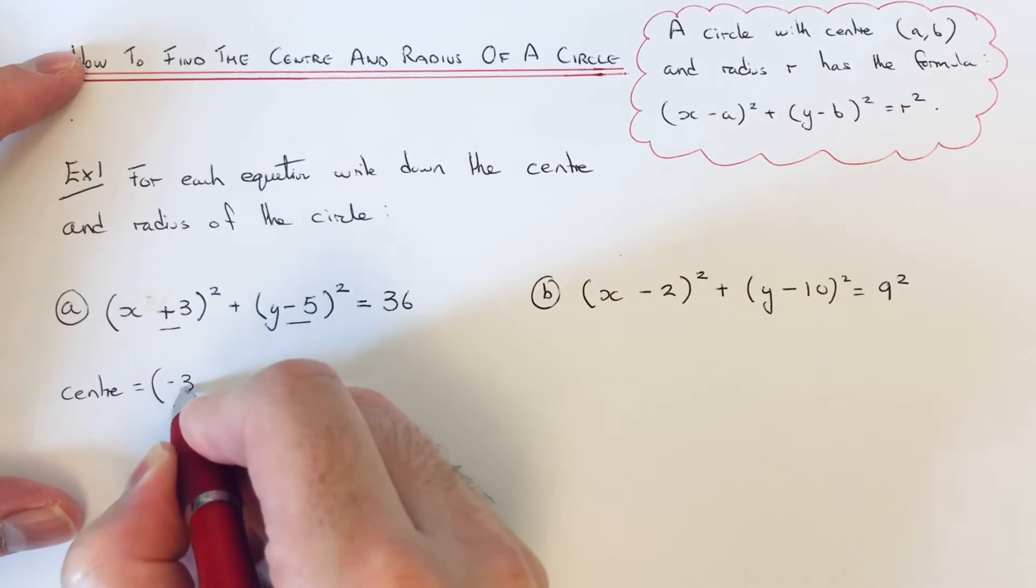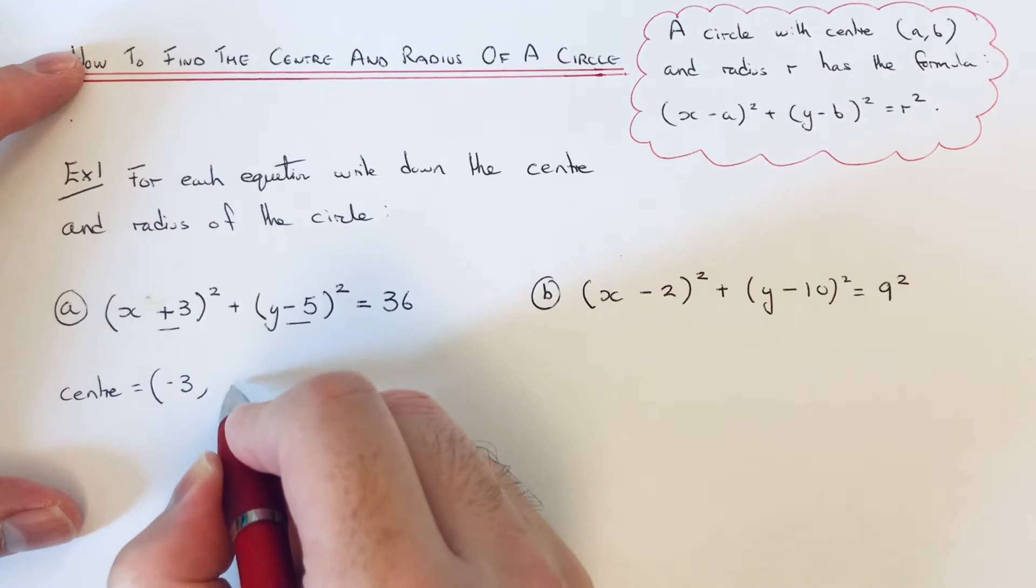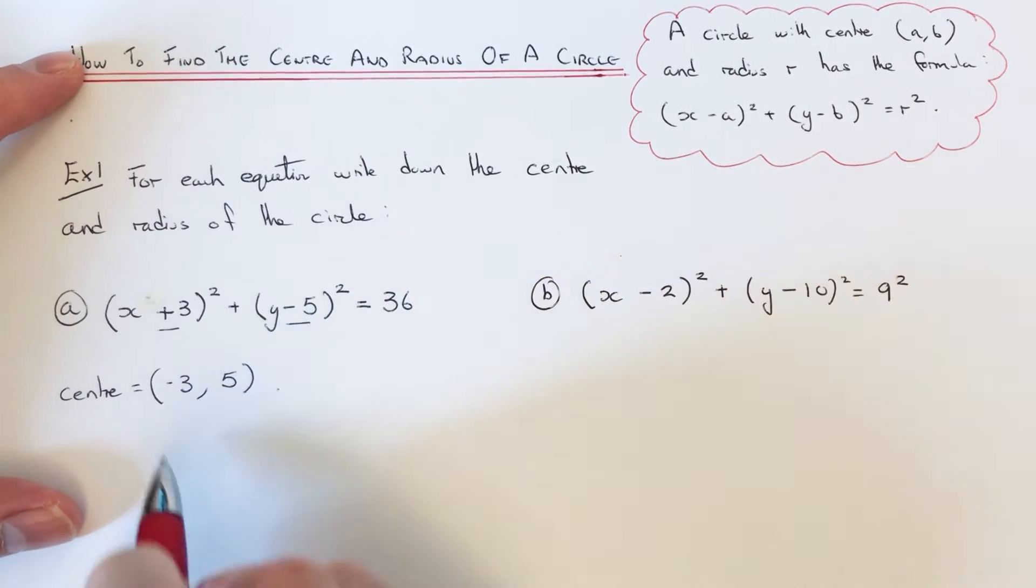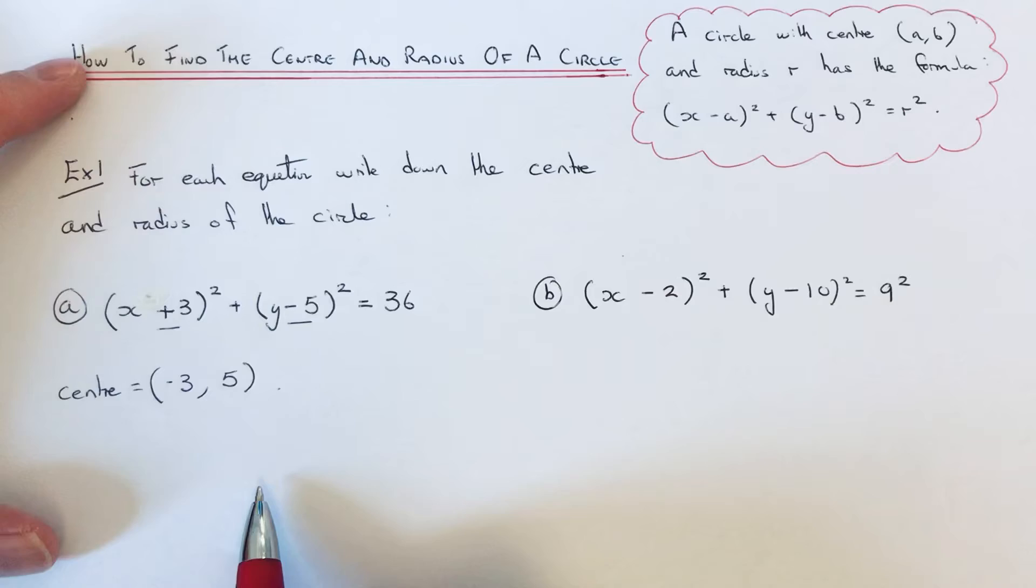So our centre would be at minus 3, and if we change the sign of minus 5, that would give us plus 5. OK, so that is the centre of the circle.